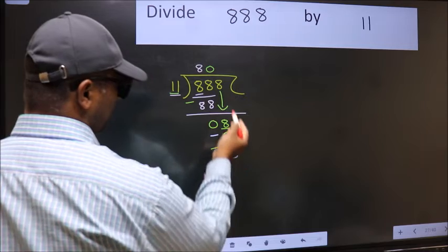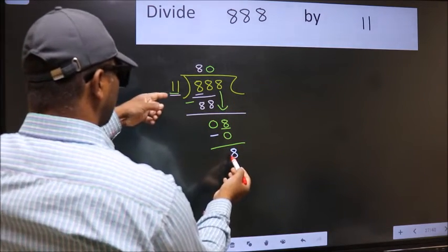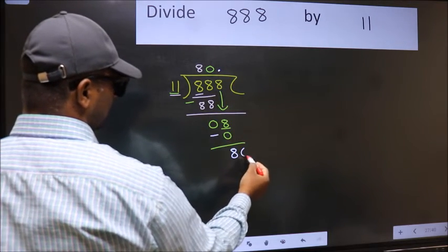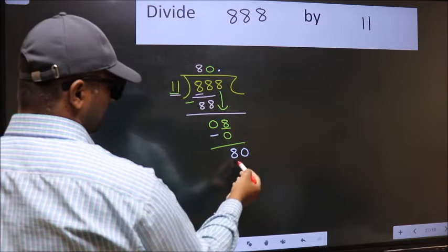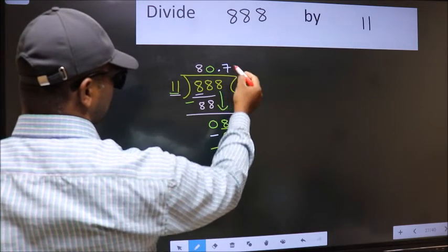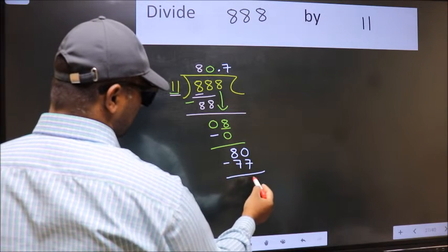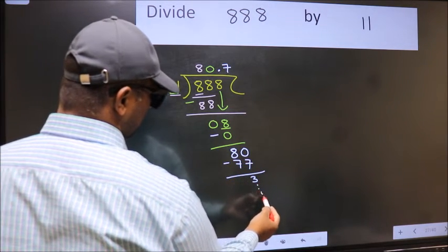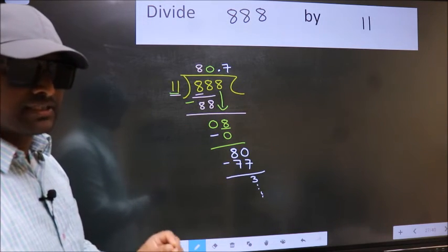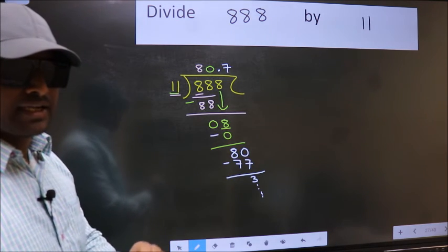We did not bring any number down, and 8 is smaller than 11 — so now you can put the dot and take 0. So we have 80. A number close to 80 in the 11 times table is 11 × 7 = 77. Subtract to get 3 and continue the division. Did you understand where the mistake happens? You should not make that mistake.